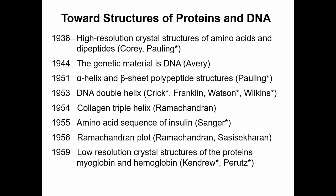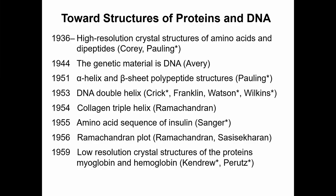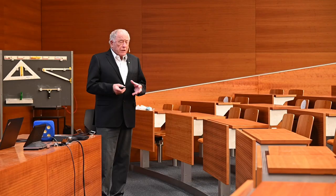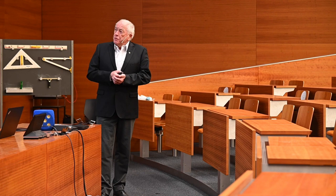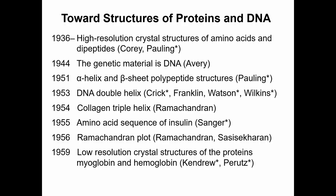In 1956, Ramachandran developed the so-called Ramachandran plot, based primarily on data measured by Pauling from 1936 to 1950 on the exact dimensions of amino acids and dipeptides. Finally, in 1959, a low-resolution crystal structure was obtained for myoglobin and hemoglobin by Kendrew and Perutz. I want to illustrate these last two achievements because they have a very strong influence on the work we are doing today.